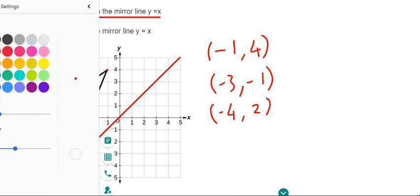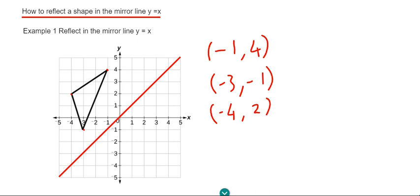Okay, so now what we're going to do, we're going to work out the coordinates of the new corners in our image. And to do this you just need to swap the x and y coordinates over.